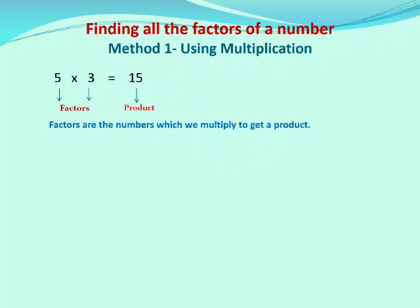Now let us take one example to find all the factors. Find all the factors of 20. We have to write 20 as a product of two numbers, thinking of all possible combinations. We will start from 1 and keep trying all possible numbers. You know that 1 is a factor of every number. We can write 20 as a product of 1 and 20: 1 into 20 equals 20. So 1 and 20 are factors of 20.